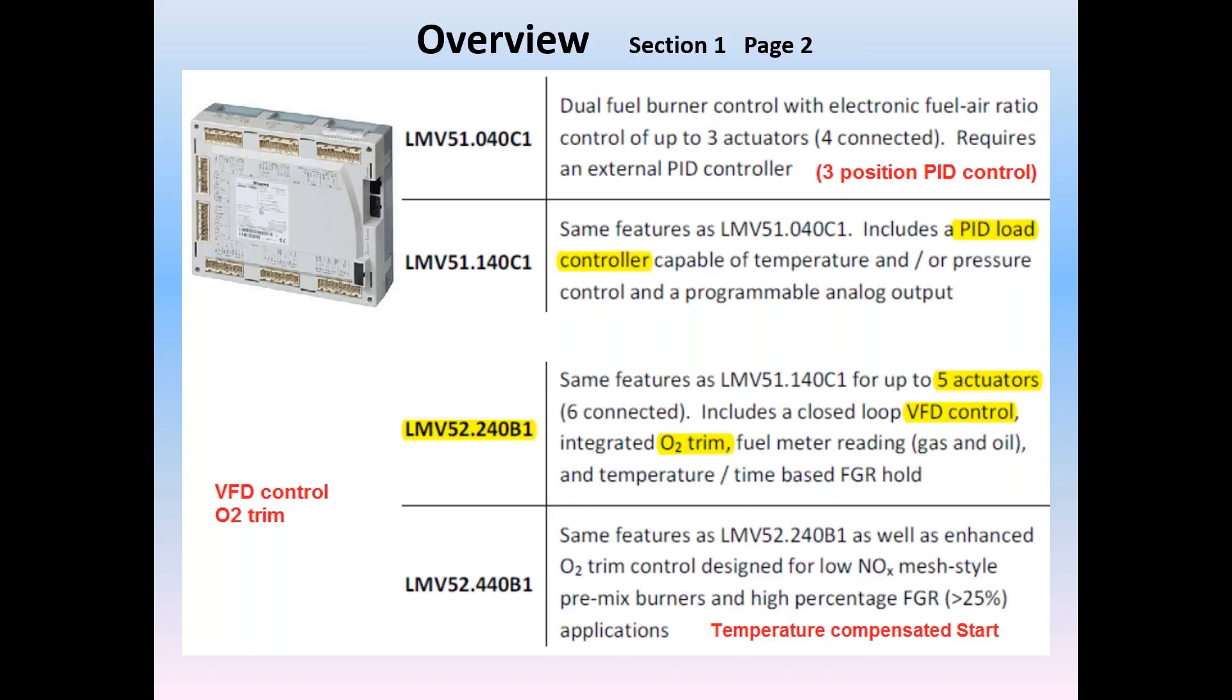A linkage-less flame safeguard, controlling three actuators with software and terminals for two fuels, gas and oil. This version requires an external load controller, and which means specifically a limit device to turn the burner on and off, as well as a firing rate signal. This signal must be a three position input, 120 volt increase, 120 volt decrease, or no position hold the current firing rate.